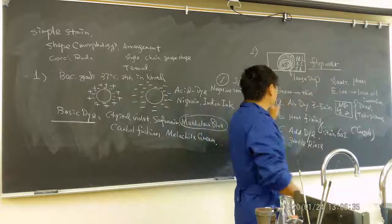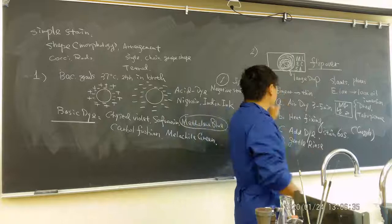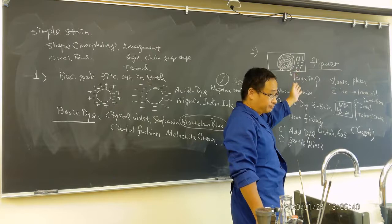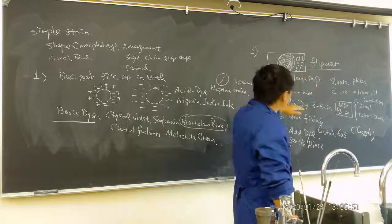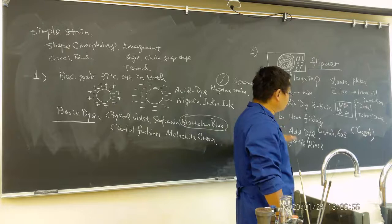So that is a step for the simple stain. So the key thing here: loop has to be flaming, sterilized. Between the drop on water and the carry on bacteria, that has to be completely sterilized. Smear has to be thin. Air dry completely followed by heat fixing. Then you add a dye. So that should be easy to do. Any questions? If no questions, everybody go ahead to get your microscope at the back. Then go ahead to do it.